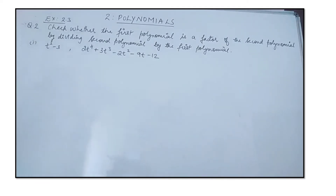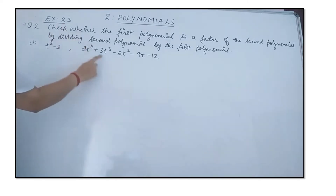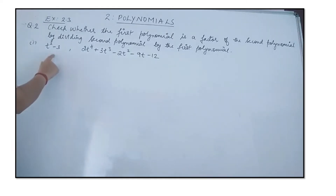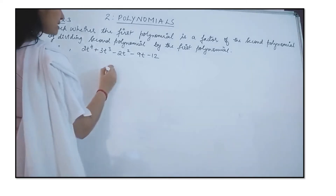If we get the remainder to be 0, then the first polynomial will be a factor of the second one. If the remainder is not equal to 0, then we will say that the first polynomial is not a factor of the second polynomial. So we will start dividing the two polynomials.